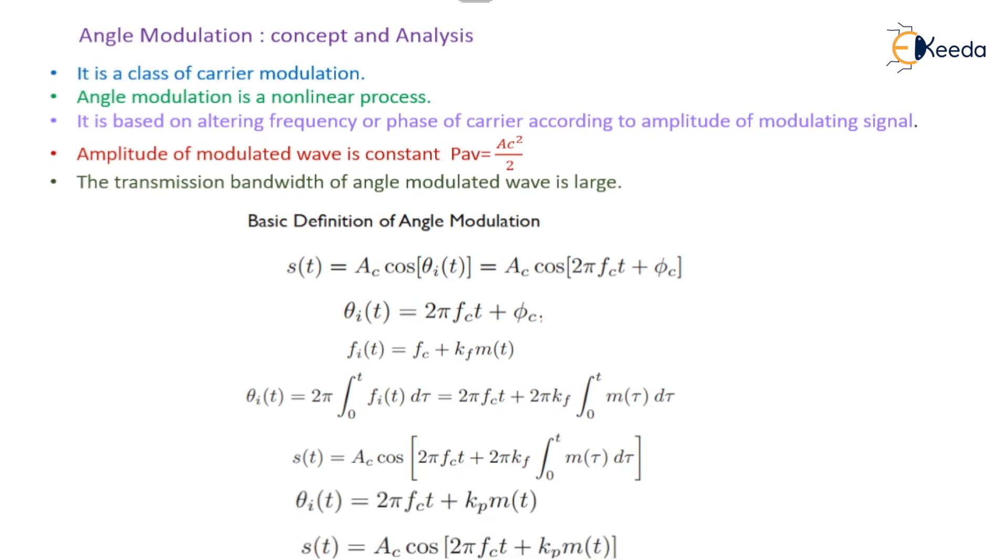Here kp is nothing but the modulation index of phase modulation, and the final expression of the phase modulated wave is s(t) = Ac cos[2π fc t + kp m(t)].